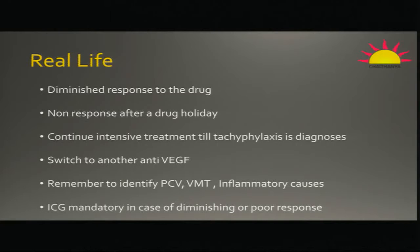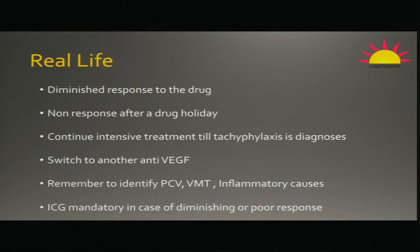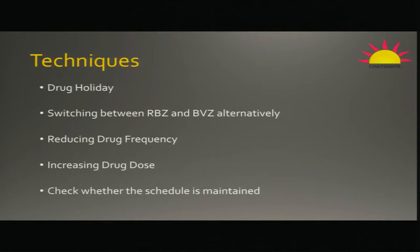In real life, when you have a reduced response, you have to make sure there is proper adherence to protocol. Has the patient been given drugs on a four-weekly interval? You can ask for a drug holiday — stop the drug for two weeks or two months and see if response returns, to differentiate between tachyphylaxis and tolerance. You can try switching to another anti-VEGF, and you must rule out causes like PCV or RAP to make sure these are not why your anti-VEGF is not working. You can also reduce drug frequency or increase the dose from 1.25 mg to 2.5 mg if it's bevacizumab. Most importantly, check whether the schedule for follow-up and treatment has been maintained.